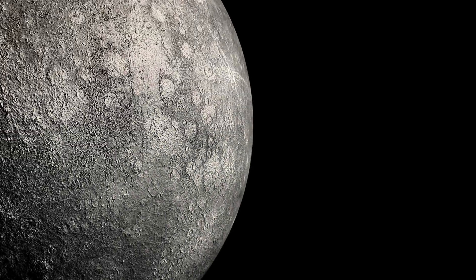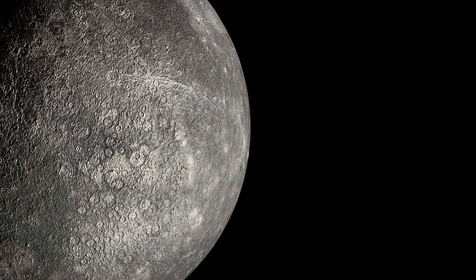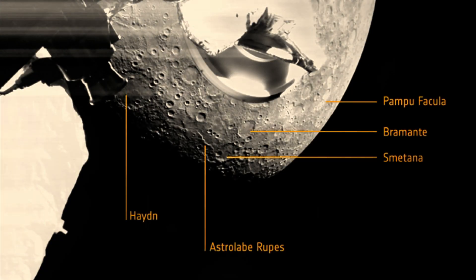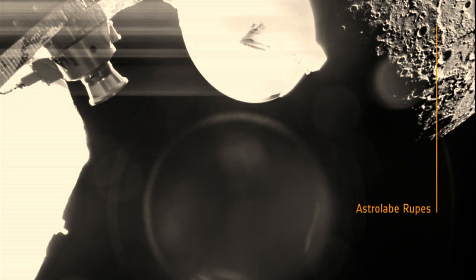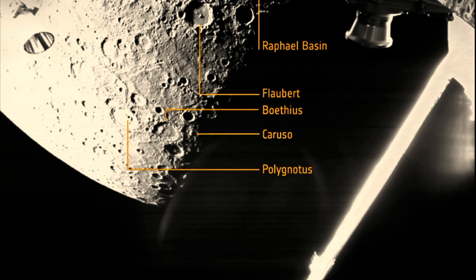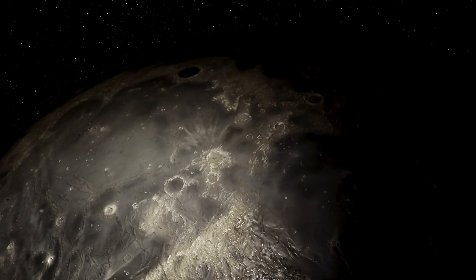Mercury is shrinking. As its core cools, the planet contracts, crushing itself. These scars, lobate scarps, are tectonic wrinkles taller than Everest, 300 miles long. A planet eating its own skin. But why? Is this a slow death? Or a transformation?